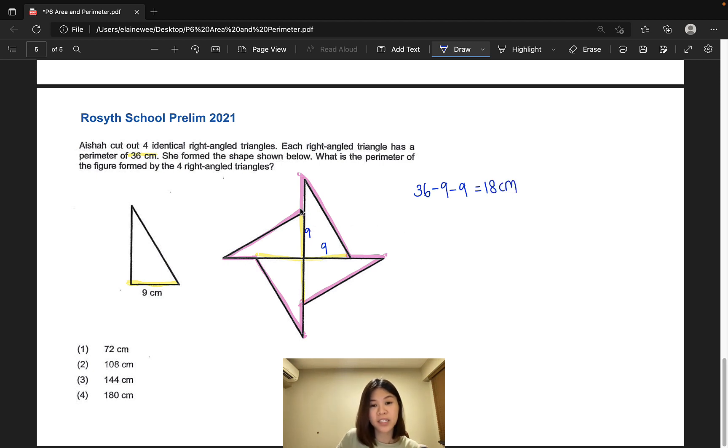And this figure is made up of 4 sets of this 18 cm, right? 1, 2, 3, and 4. So we simply multiply 18 by 4 and there we have it. Our answer to this question, option number 1.